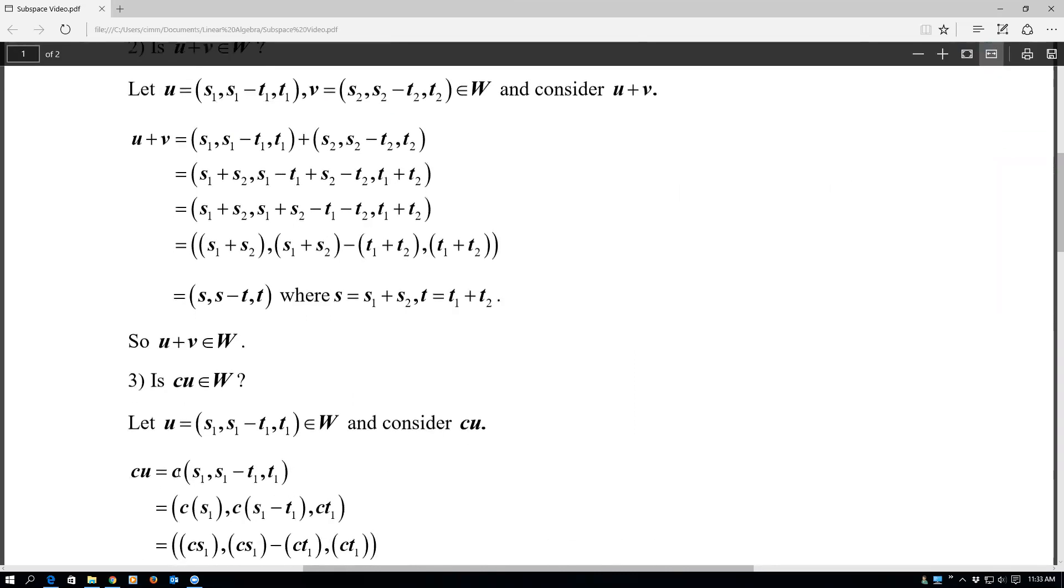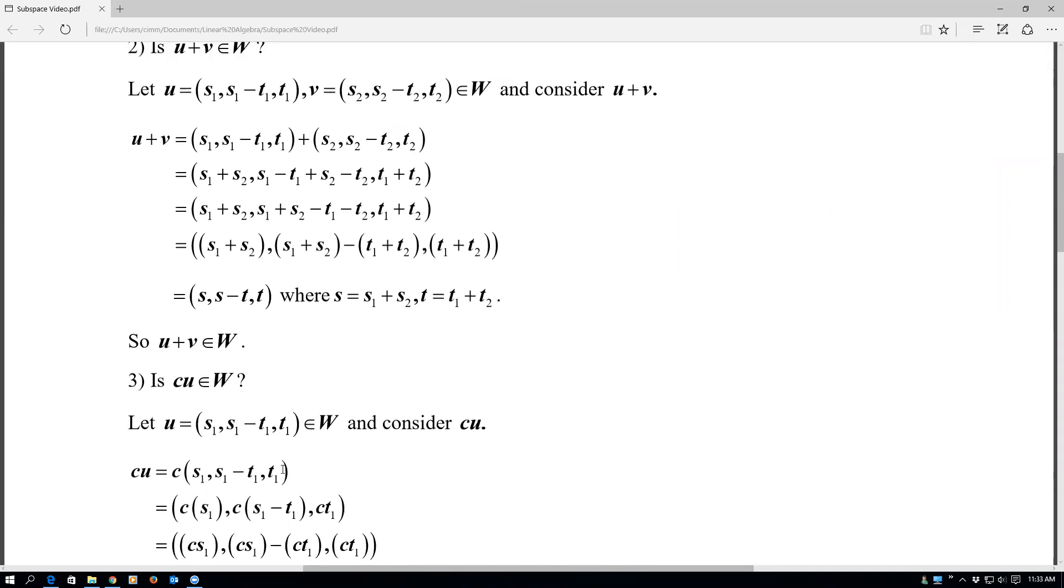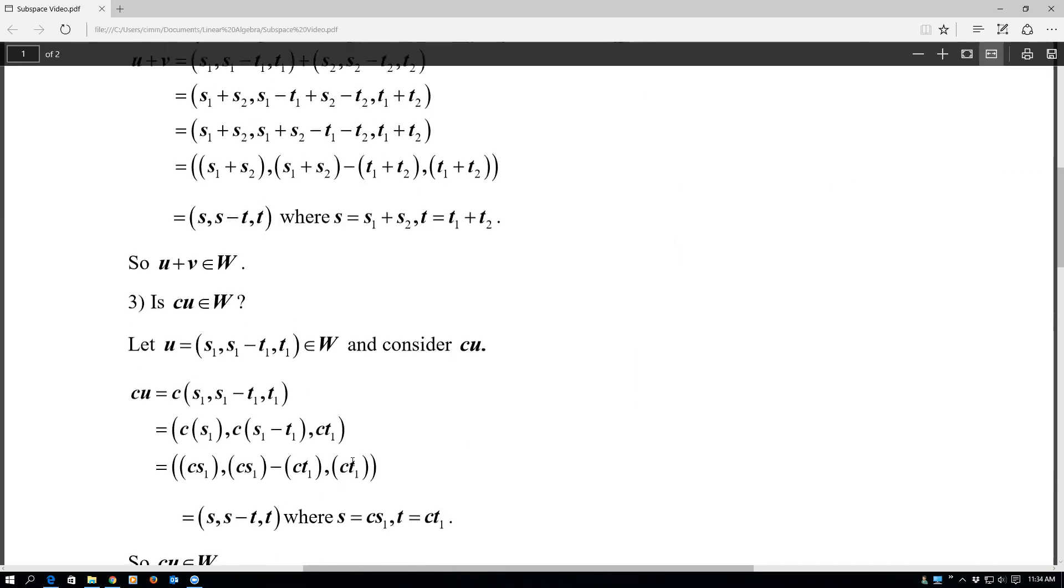So C filters in to the vector, just like we've learned in the past. So we have to take C times every component, and then I distribute in, so I can regroup, reassociate here, distribute the second one in, and reassociate here.